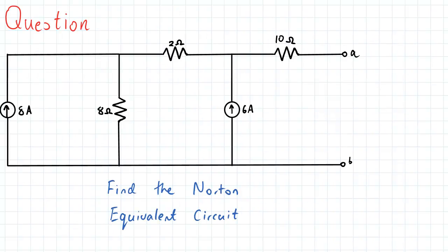So here we have our question. We have this circuit configuration as seen over here. We have two independent current sources, 8 amperes and 6 amperes, and we have three resistors: 8 ohms, 2 ohms, and 10 ohms.